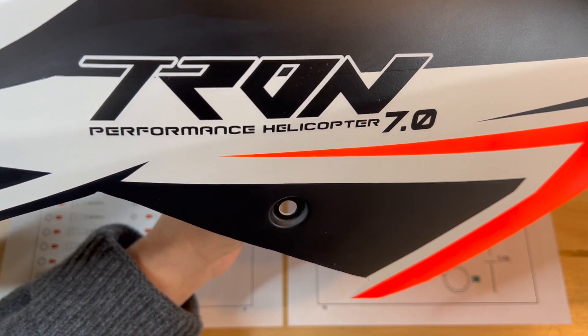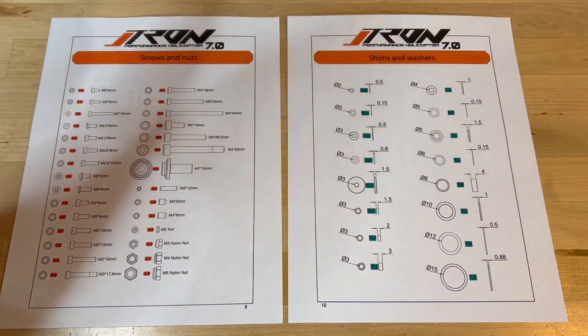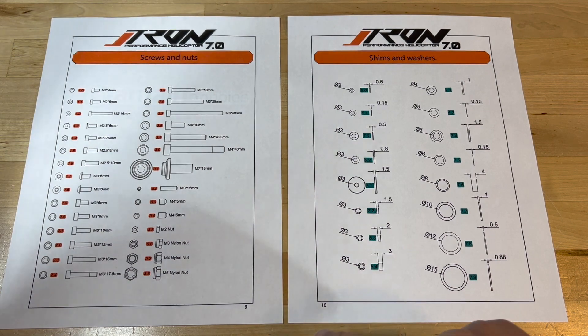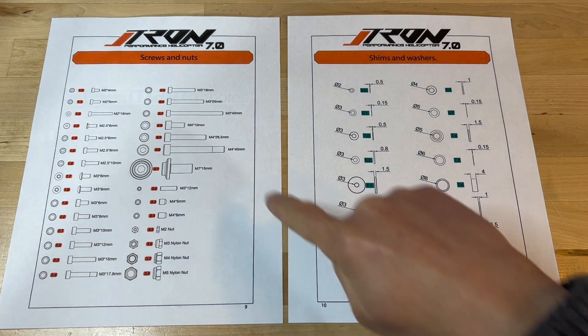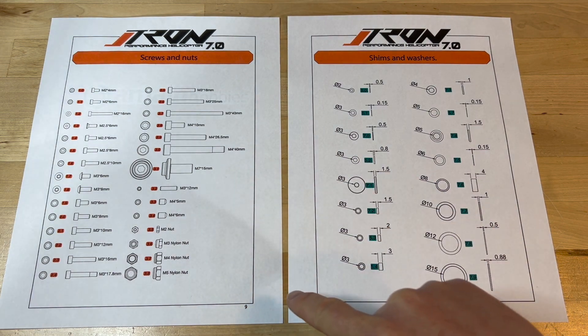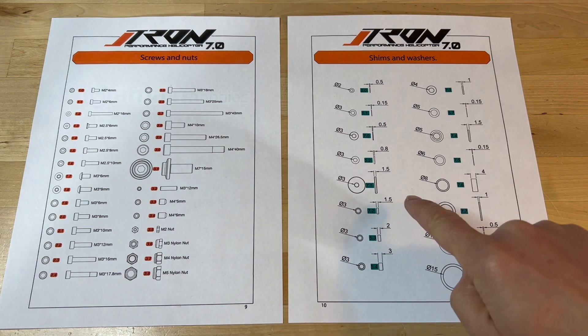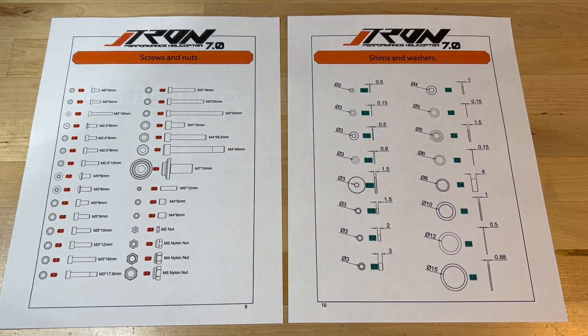When building the Tron 7 helicopter, I feel that it really helps to print pages 9 and 10 of the manual for reference to the hardware used like bolts, shims, and washers.